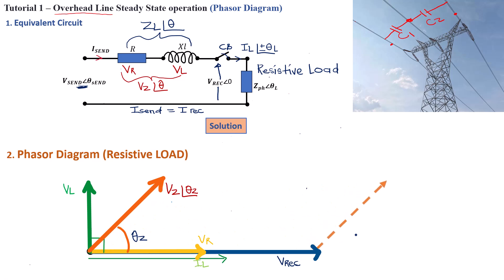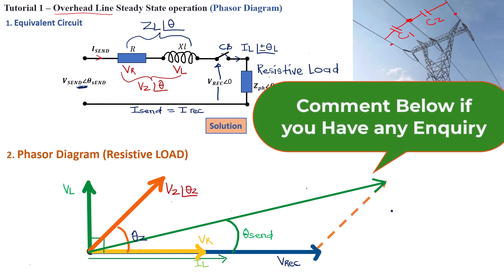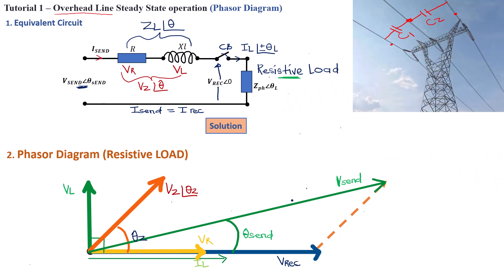We project the voltage across the transmission line to the top of V-receiving end. Since we can calculate V-sending by adding VZ plus V-receiving, that also gives us the angle of V-sending, theta-send. Once we know the angle of V-sending, we can draw it from the origin so we know exactly where V-sending stands. We go ahead and place theta-send, and then draw V-sending from the origin. That is how you draw a phasor diagram for a resistive load for a short transmission line with your impedance parameters.